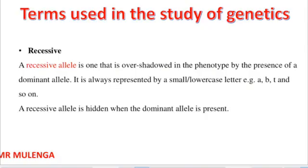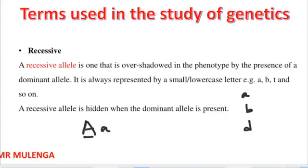A recessive allele is one that is overshadowed in the phenotype due to the presence of the dominant allele. Recessive alleles are always presented in lowercase letters. For example, if you have a capital letter A (dominant) paired with a small letter a (recessive), the dominant allele hides the recessive allele.